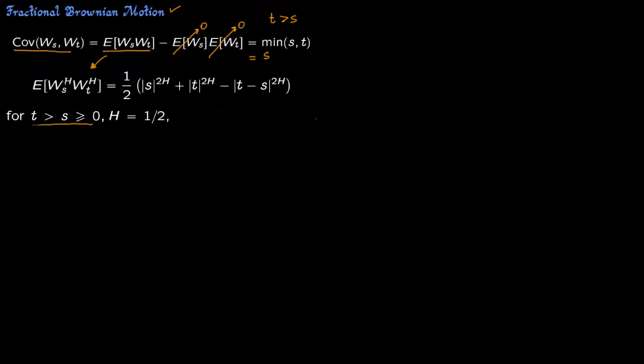Exactly as such, I've just introduced a superscript h here for the Hurst coefficient. The covariance between Ws and Wt which is given by this formula is half times the absolute value of s to the power of 2h plus absolute value of t to the power of 2h minus t minus s to the power of 2h.